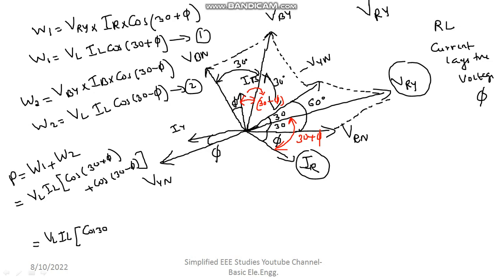Cos 30 cos φ minus sin 30 sin φ plus cos 30 cos φ plus sin 30 sin φ. Like that you will get. Now, similar terms you can add and you can cancel these terms.